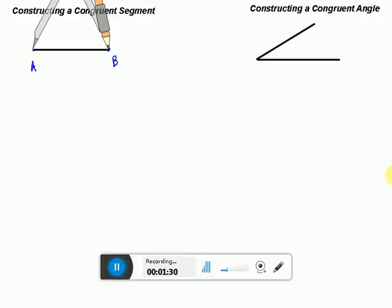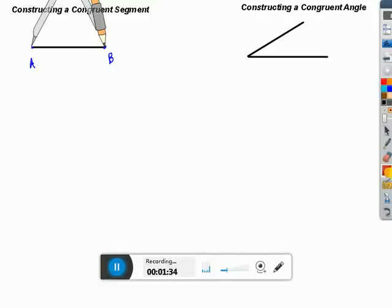Now, what I want to do is just draw any segment. So, using your straight edge, just draw any segment as long as it's longer than A, B.